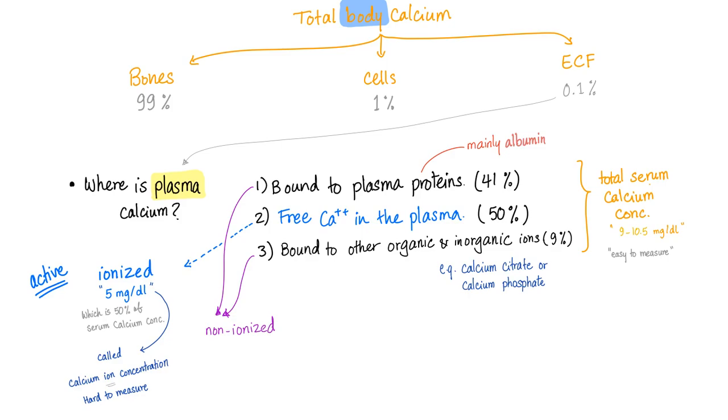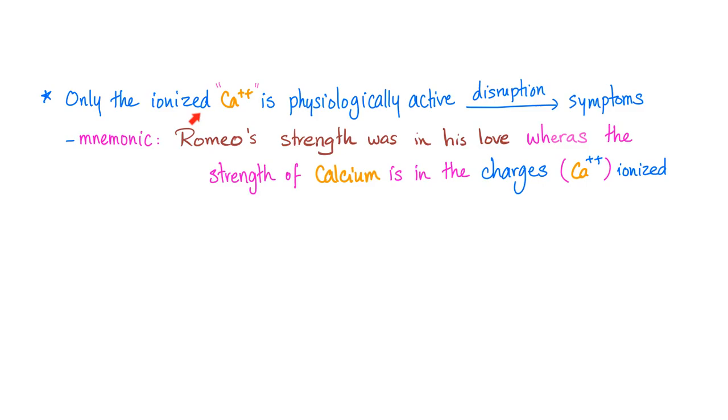Only the free calcium in the plasma is ionized. But please understand, when you order serum calcium in the lab, and it comes normal between 9 and 10.5, this is not the free plasma calcium. Because the free plasma calcium is only 5 milligrams per deciliter. Why couldn't I just order ionized calcium? Because it's so stinking expensive. It's way easier to order total serum calcium. Only the ionized, that charged calcium 2 plus, is physiologically active. Disruption in this calcium level will lead to symptoms.